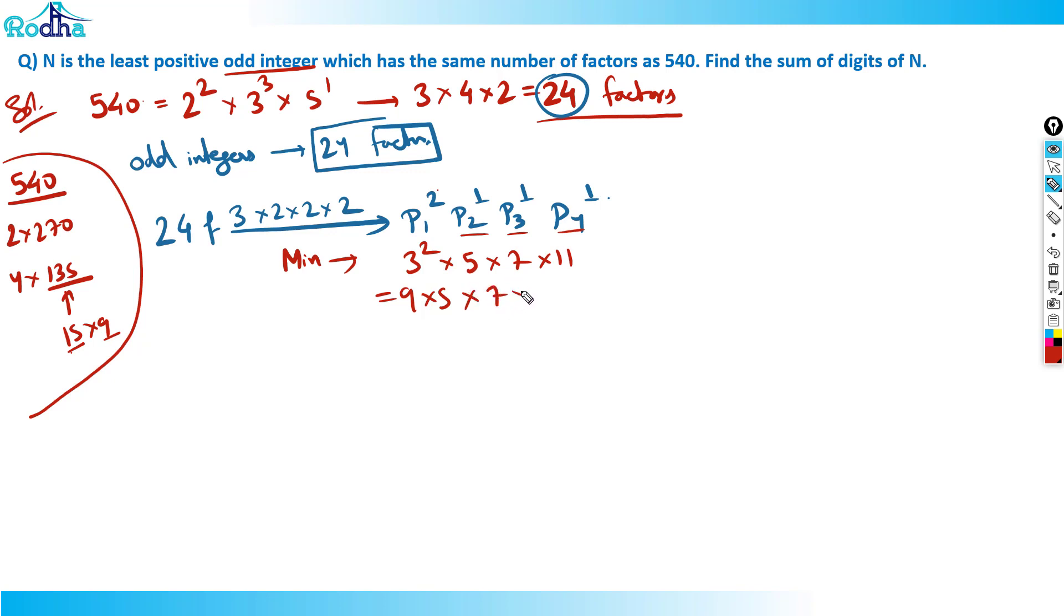Number becomes what? Nine into five is 45, 45 into seven is three one five, and three one five into eleven is what? Three four six five. So three four six five is the answer. In fact we were asked to find the sum of digits actually, that is what? Three plus four plus six plus five, that is equal to eighteen. So it would be the answer.